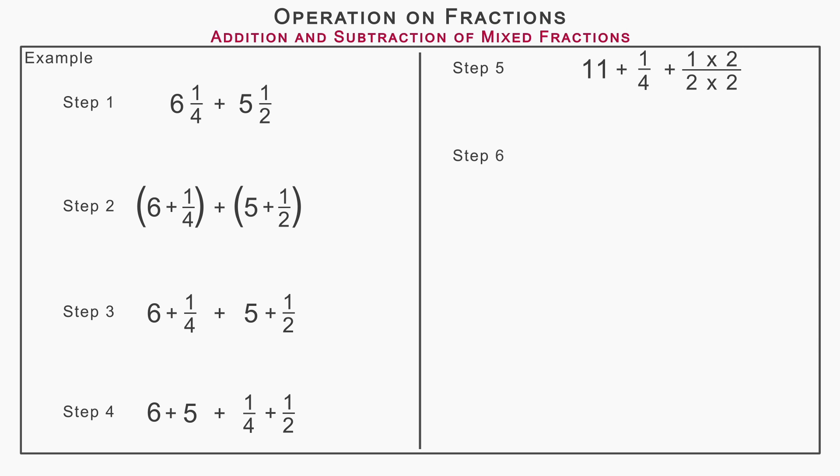So in step 6, we get 11 plus 1 upon 4 plus 2 upon 4. Step 7 shows the addition of common fractions, that is 11 plus 1 plus 2 upon 4.